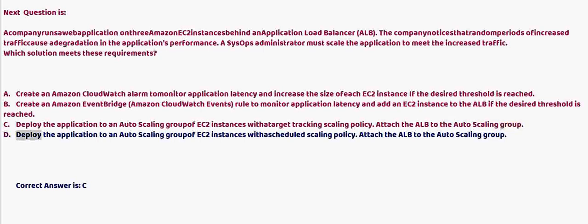Option D: Deploy the application to an Auto Scaling group of EC2 instances with a scheduled scaling policy. Attach the ALB to the Auto Scaling group. The correct answer is C.